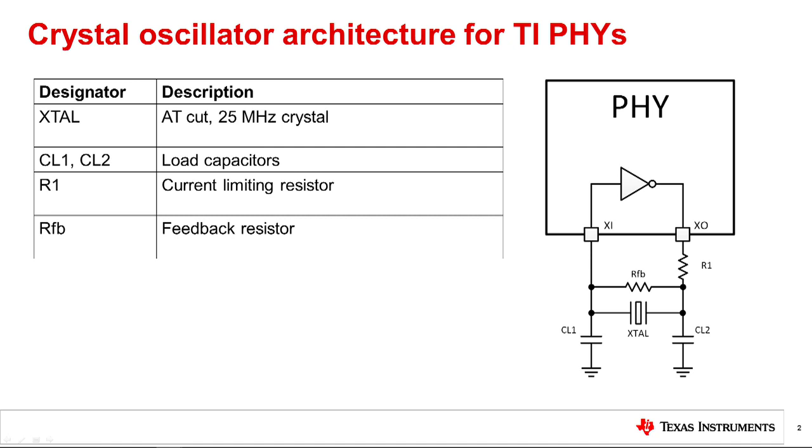The oscillator uses an AT-cut crystal that must meet the requirements shown in the datasheet of the chosen PHY. AT-cut crystals are the most common crystal type. These will be the focus of our discussion. The crystal should also be a parallel resonant crystal, not a series resonant crystal.